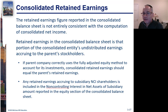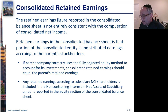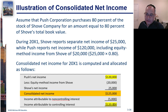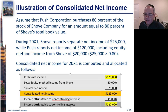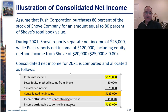Retained earnings is not going to include all of the consolidated income, because retained earnings only belongs to the shareholders. So retained earnings will only include net income attributable to the parent — in other words, the $120,000. The $5,000 attributable to the non-controlling interest goes to the non-controlling interest. So the $125,000 gets split: the non-controlling interest portion goes to non-controlling interest on the balance sheet, and the parent's share goes to retained earnings.